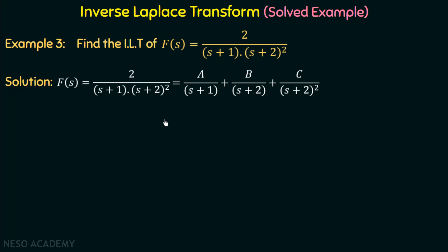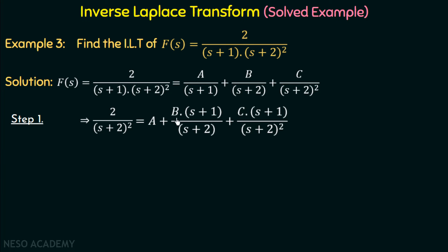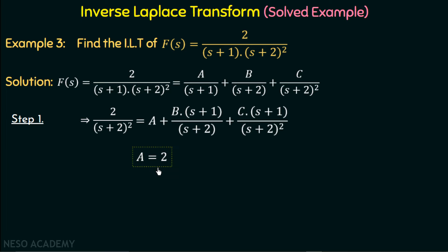Let us find out the value of A in step one. We have (s+1) as the factor, so to isolate A we need to multiply (s+1) on both sides. Multiplying (s+1) on both sides, we get 2 over (s+2) whole squared equal to A plus B·(s+1)/(s+2) plus C·(s+1)/(s+2) whole squared. In this way we have isolated A. Now putting s equal to minus one, this factor and this factor become zero, and we get the value of A equal to 2.